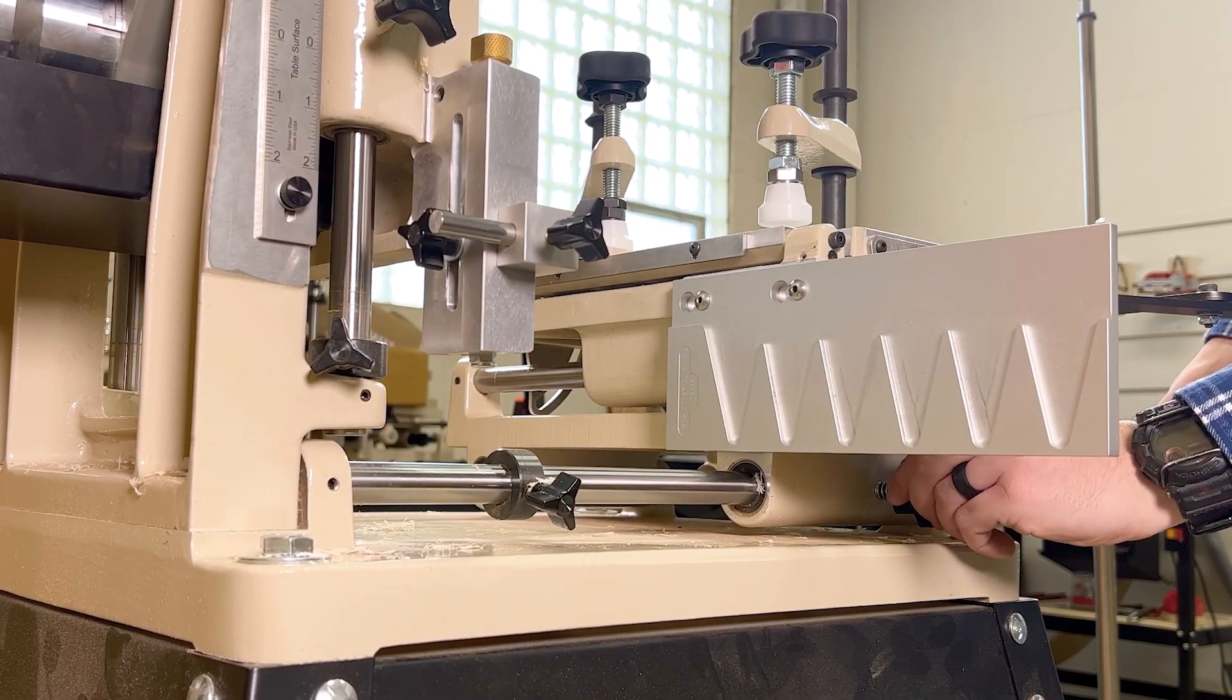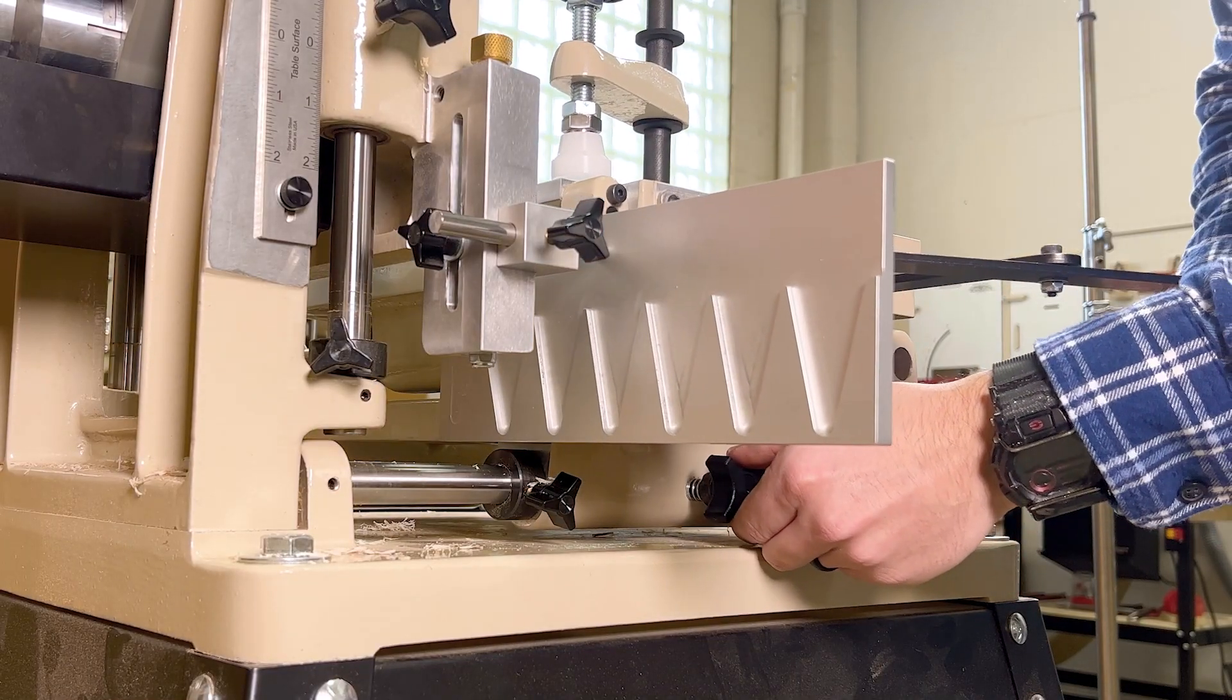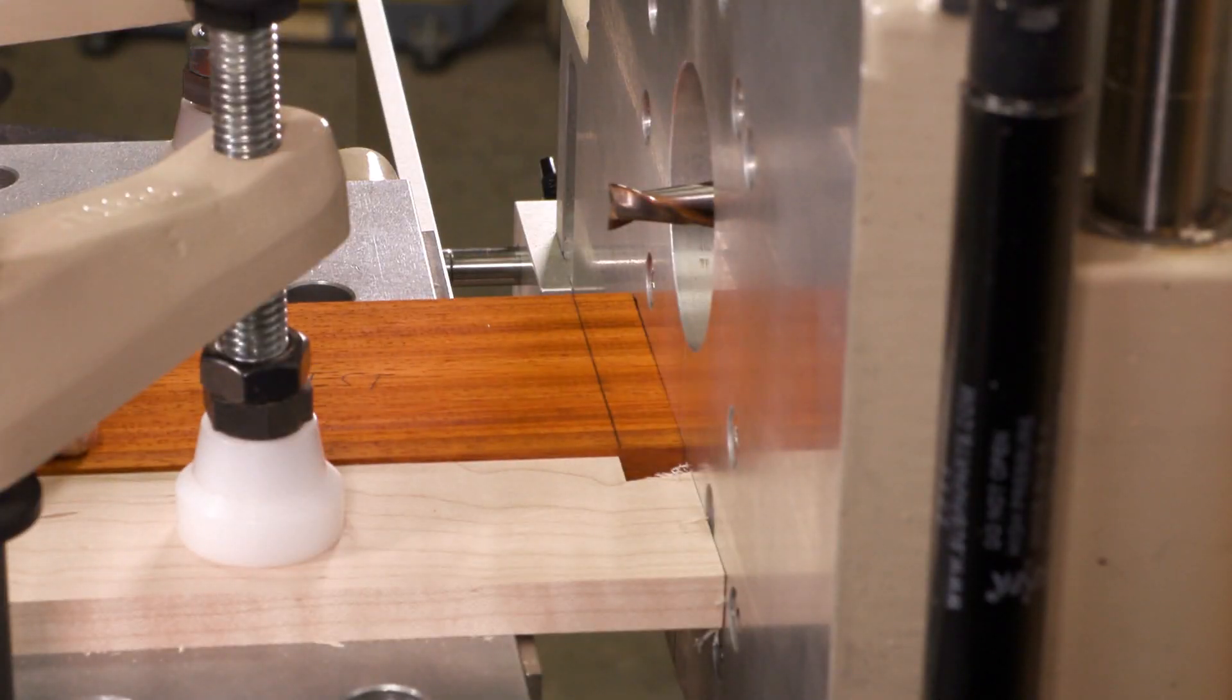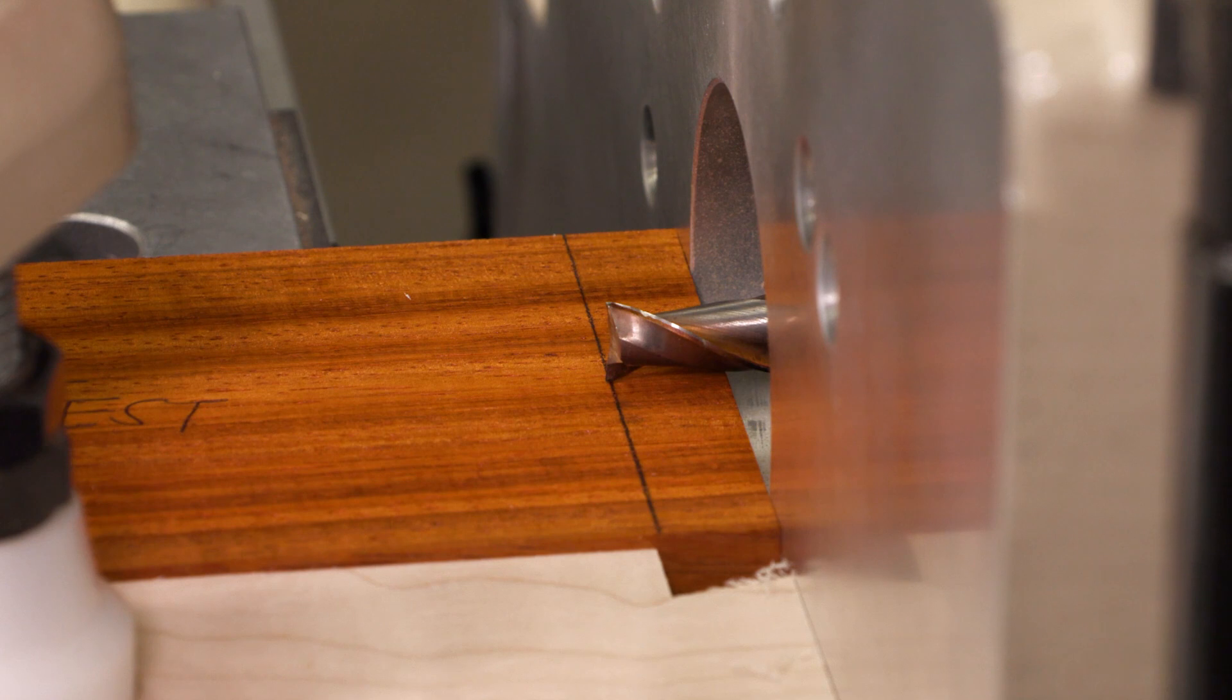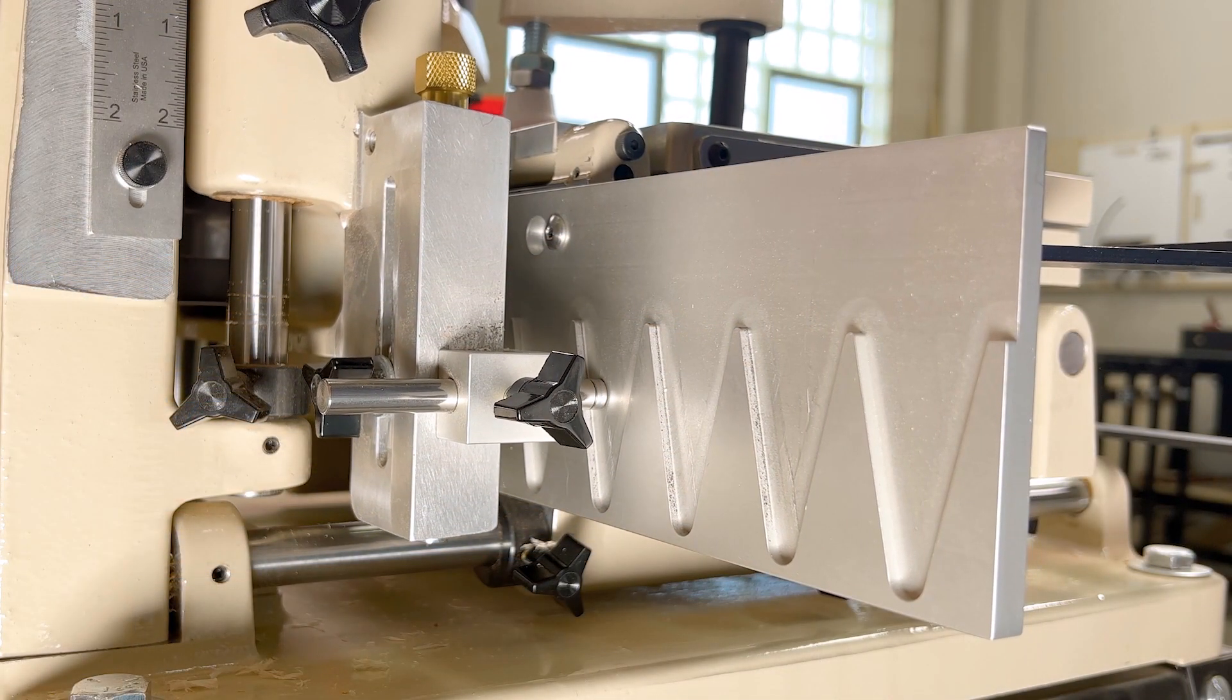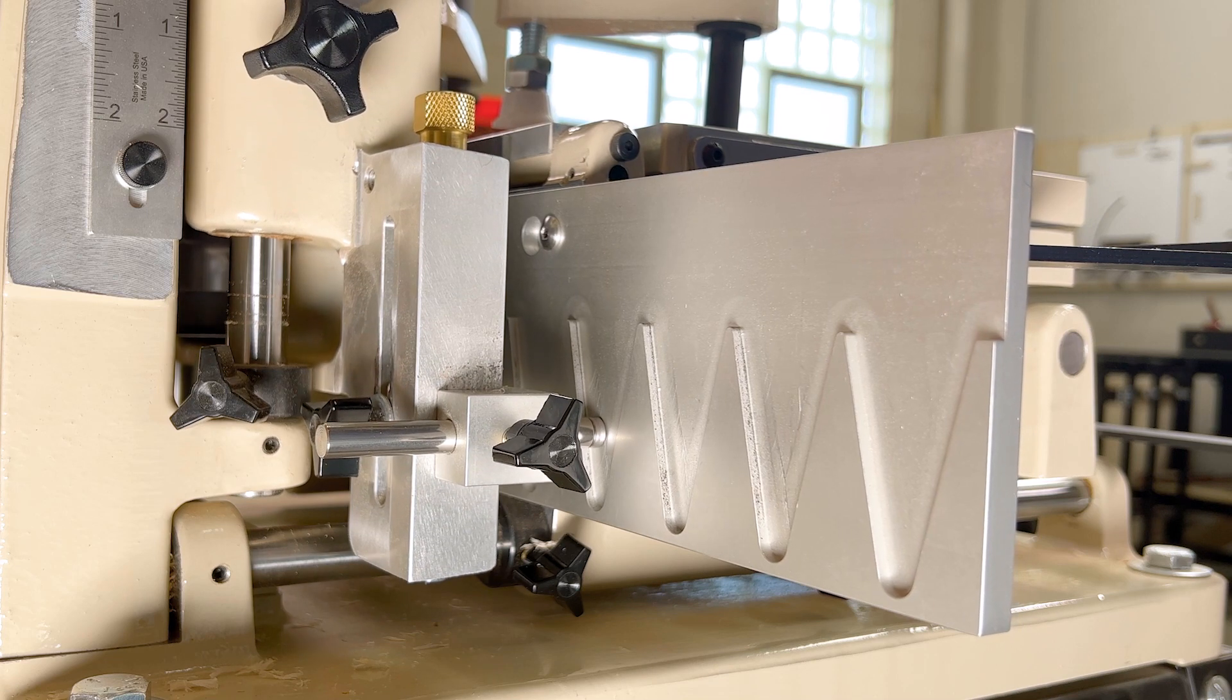Before we can start cutting, return the horizontal table to its previous position. Then set the router depth of cut to once again match the mark on your material. Follow the stylus along the template, clearing out material to create the pins.